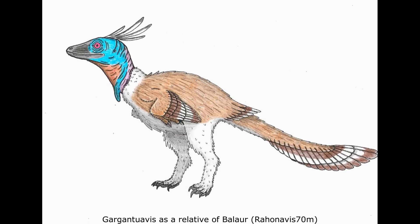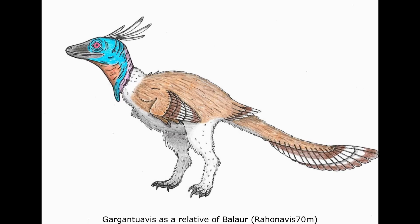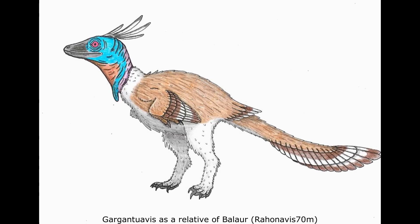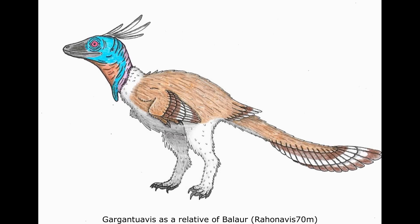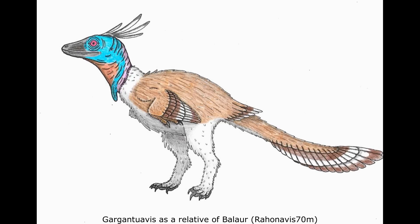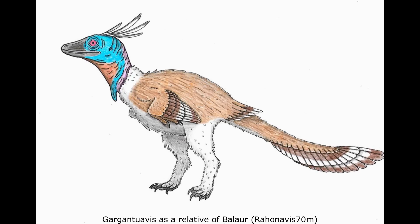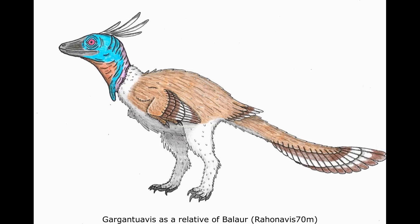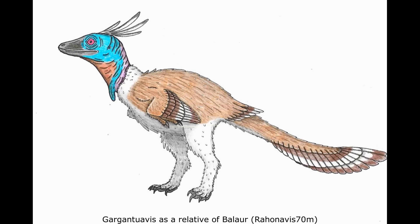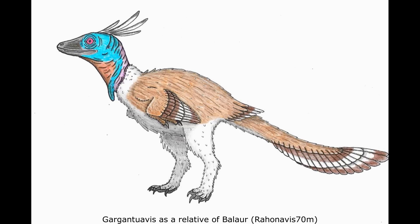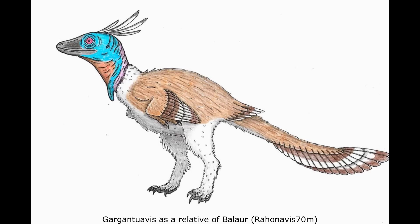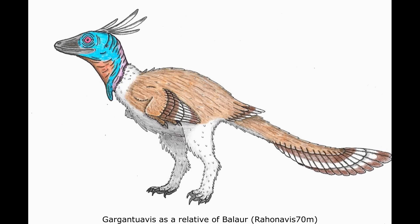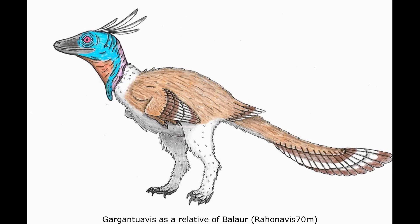The recent discovery of a nearly complete pelvis from Hateg Island in Romania was purported to show very primitive traits, with the authors of the paper suggesting that Gargantuavis was actually a close relative of the mysterious and odd Baalbondoc. However, a 2020 rebuttal of this idea argued for a more traditional placement in Ornithurae.